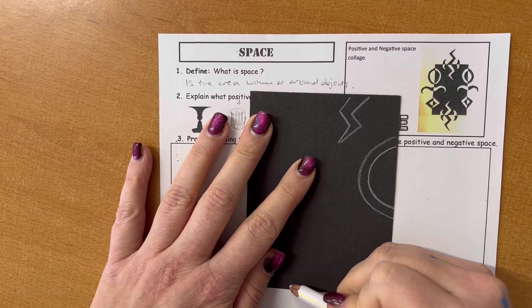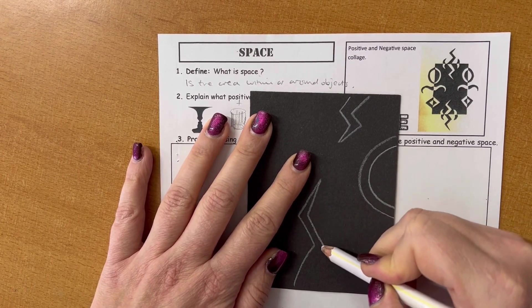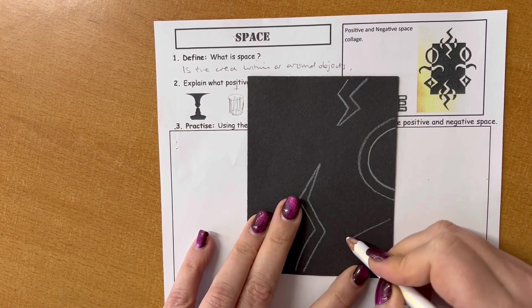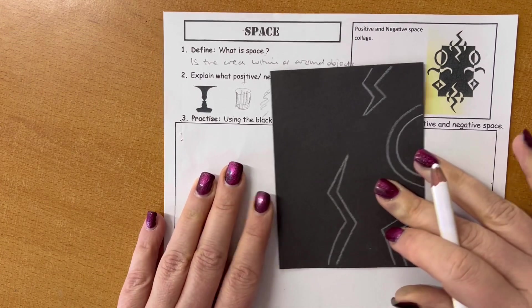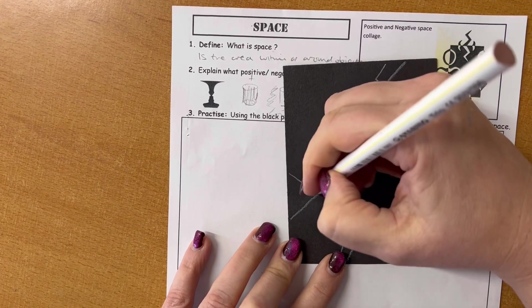And they can come inside quite far. You can do some into the corners. So think about triangles, squares, rectangles, circles, ellipses. Any shapes that you want to draw.